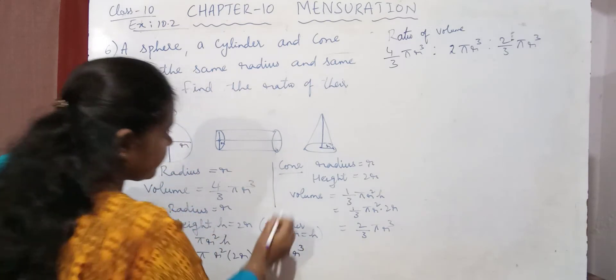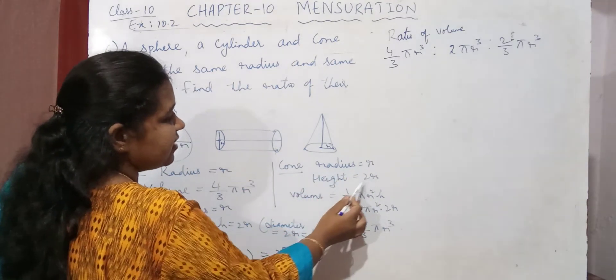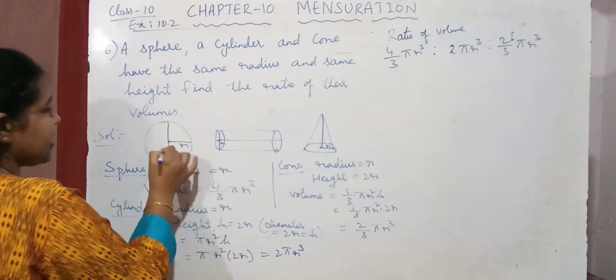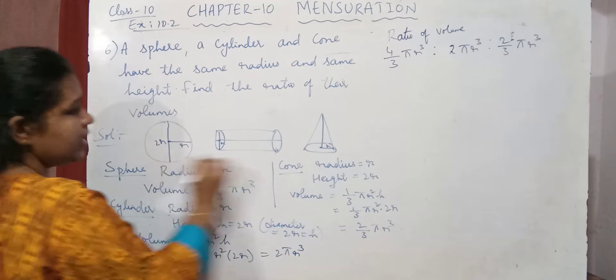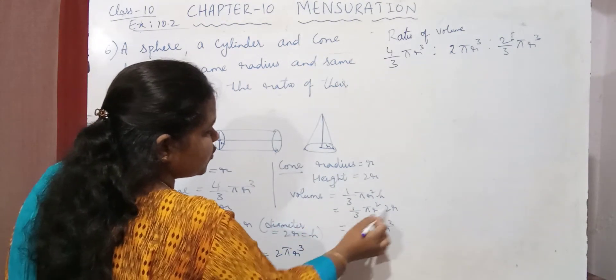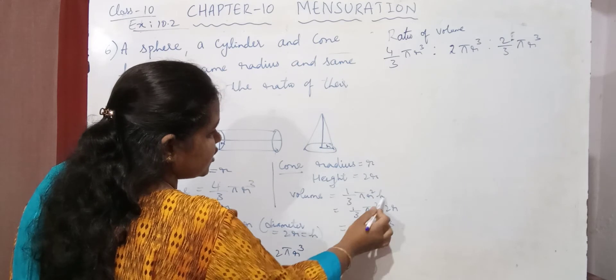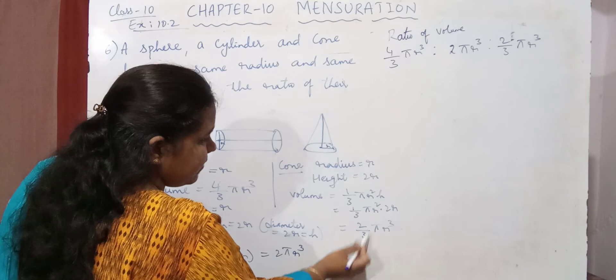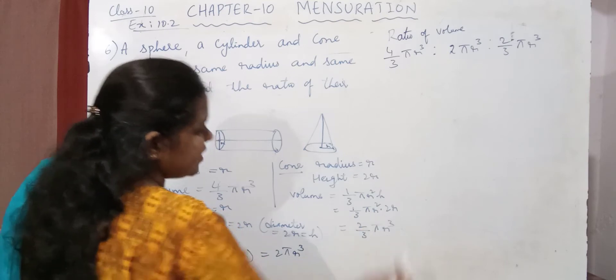Similarly, for the cone, if radius is r and height is 2r. Why am I getting 2r? Because height is same for all the 3. Here the height is 2r. So for all, I am writing height as 2r. And the volume of cone is 1 by 3 pi r square h. That is 1 by 3 pi r square. In place of h, you can write 2r. So this is 2 into 1 is 2. 2 by 3. Here pi r square into r is r cube.